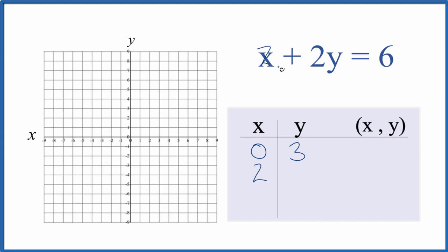So if x is 2, what I'll need to do, I have 2 plus 2y equals 6. Let's subtract 2 from both sides. And now I have 2y equals 6 minus 2 is 4. Let's divide these by 2. So y equals 4 over 2. That's 2. So we have our next point.